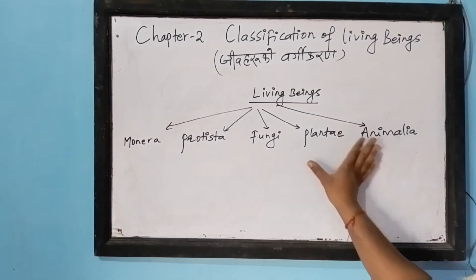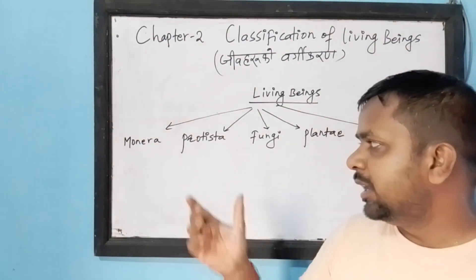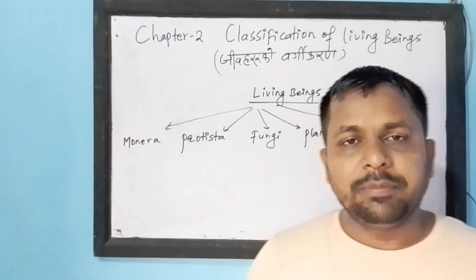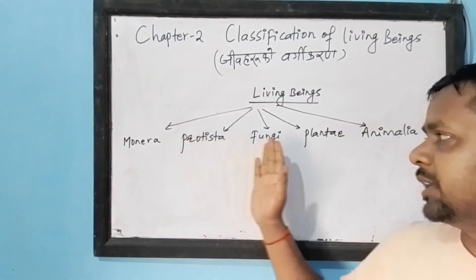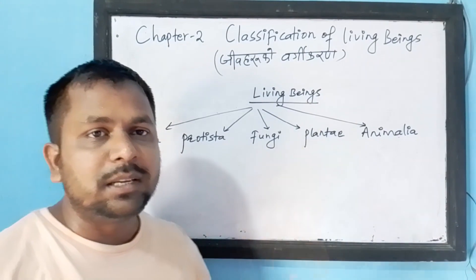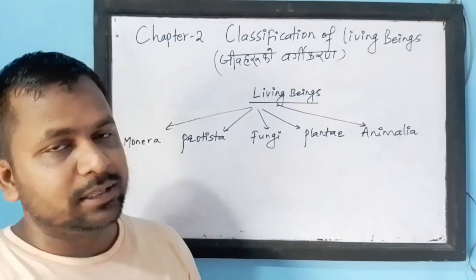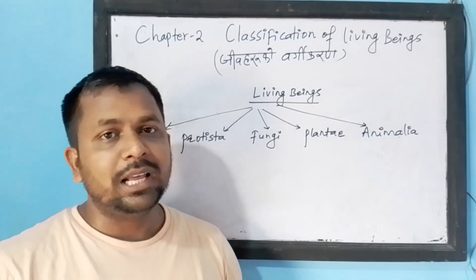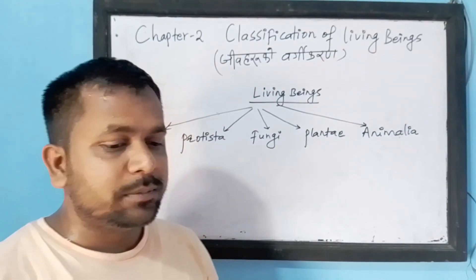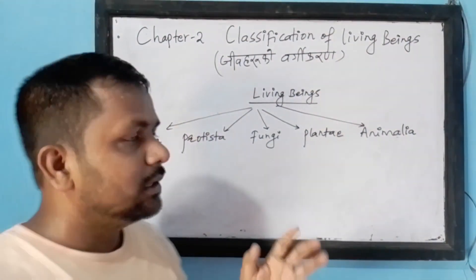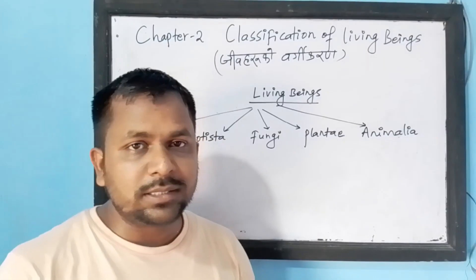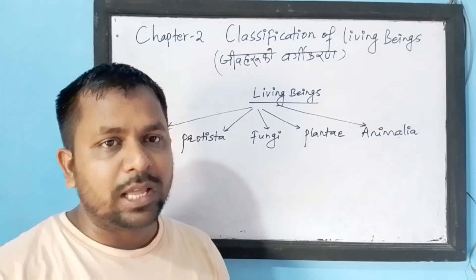We have to study these in detail in class 10. R.H. Whittaker divided organisms into five kingdoms on the basis of certain criteria. One of the bases for this five-kingdom classification was cellular organization — whether the cell is a prokaryotic cell or a eukaryotic cell.